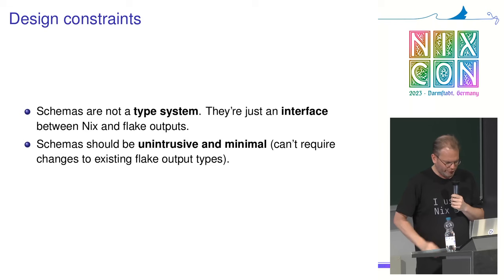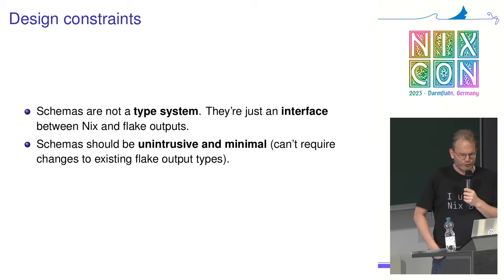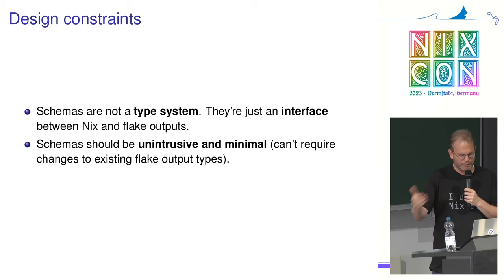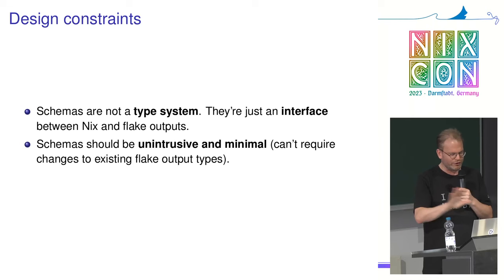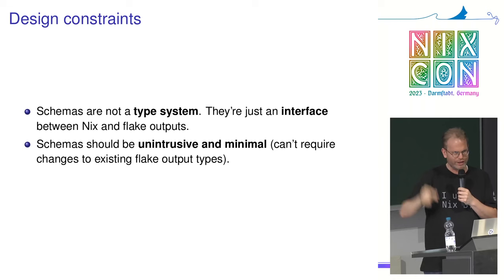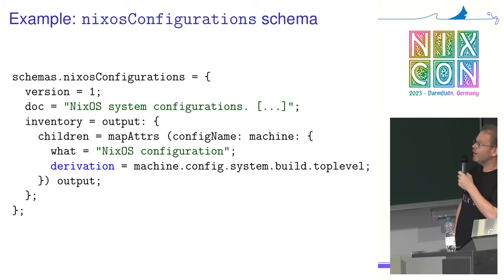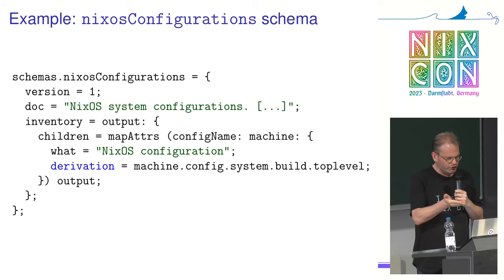There were a couple of design constraints: it should be unintrusive and minimal, easy to add, and it cannot require changing existing flake output types. They're not a type system - they're just an interface between Nix and flake output types. For example, NixOS modules have their own type system, and flake schemas don't try to replace that. Rather, they allow Nix to evaluate a bit of bridge code that uses the NixOS module system to check whether a flake output is correct. Let's look at an example - a schema for NixOS configurations.